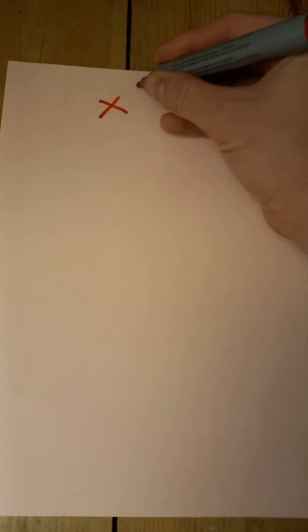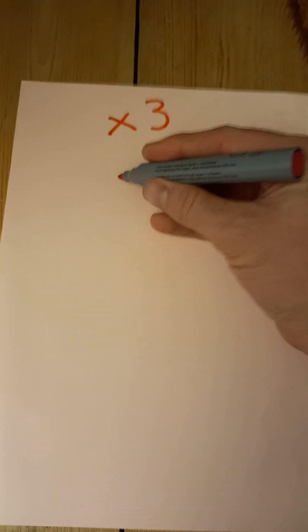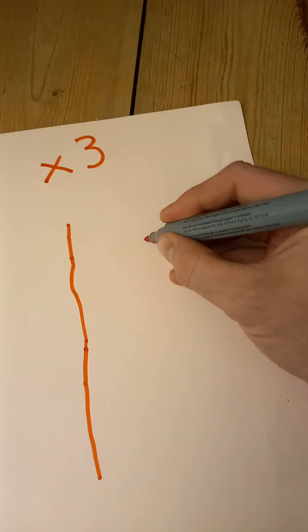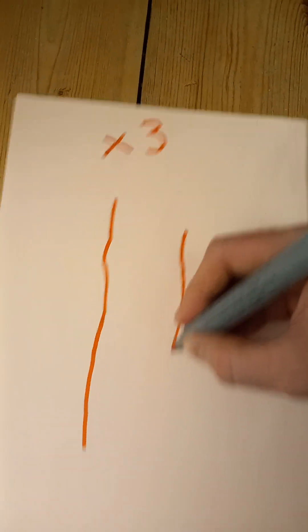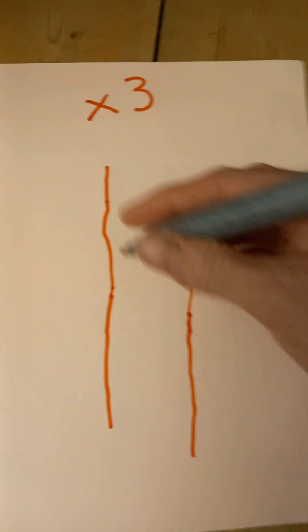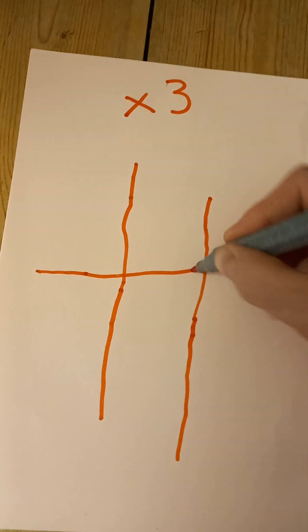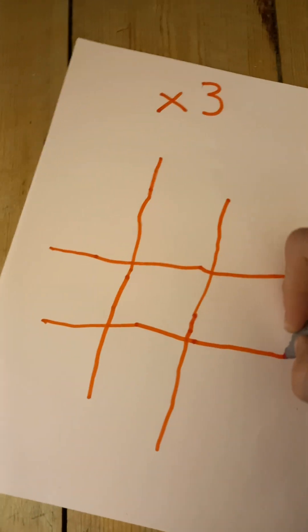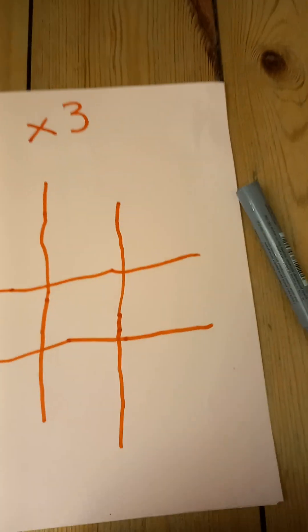Okay today I'm going to show you the three times table. I'm going to write times three. What we're going to do is we're going to draw a lovely noughts and crosses. So there you go. Okay that's the first step.